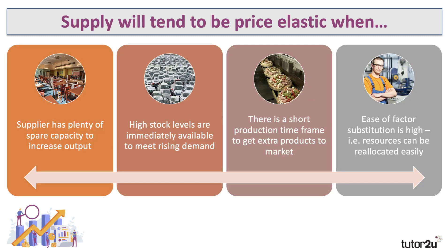Supply will tend to be price elastic when the supplier or manufacturer has plenty of spare productive capacity available to increase output — maybe some factories working a little bit below potential, or spare labor they can bring into the production process. Supply is also price elastic when there are high levels of stocks — of component parts, raw materials, and other inputs — available to help meet growing demand.